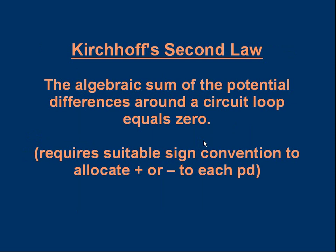Some textbooks give a more advanced definition of Kirchhoff's Second Law: the algebraic sum of the potential differences around a circuit loop equals zero. In this definition, we don't separate EMFs from potential differences. Instead, everything in the loop has a potential difference — some positive, some negative — based on a sign convention determined by current direction and battery polarity. Following that sign convention, the sum of all potential differences around a loop always equals zero. The basic thing to remember is simply that if you go around a loop, the voltages add up to whatever the battery's voltage is in that loop.